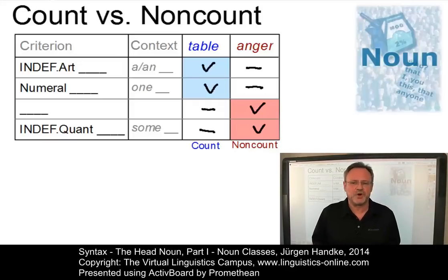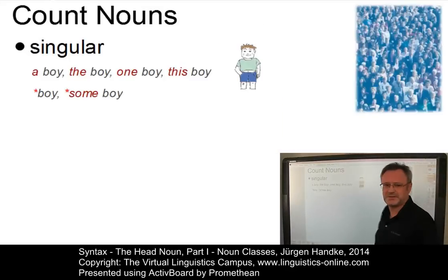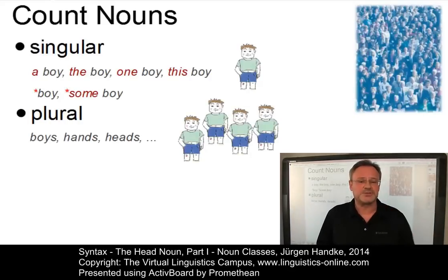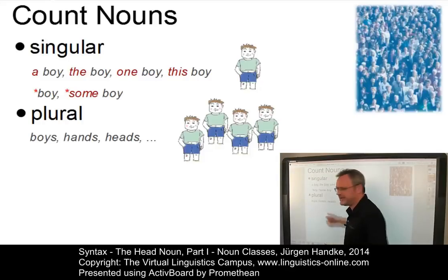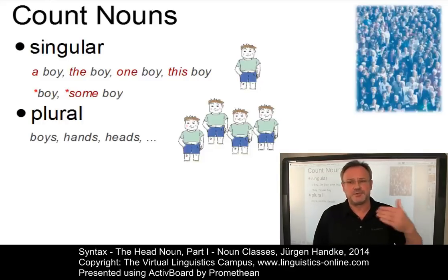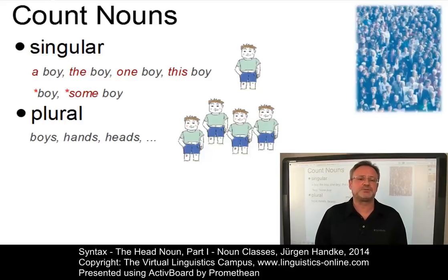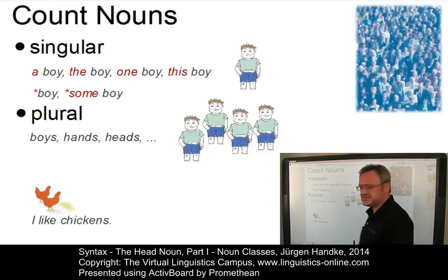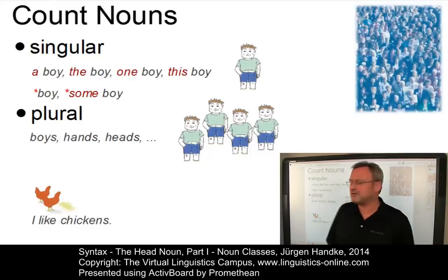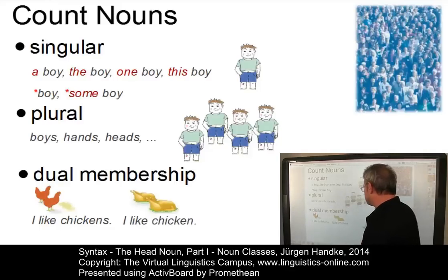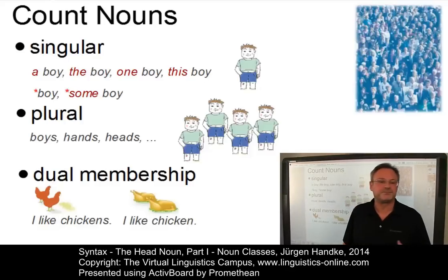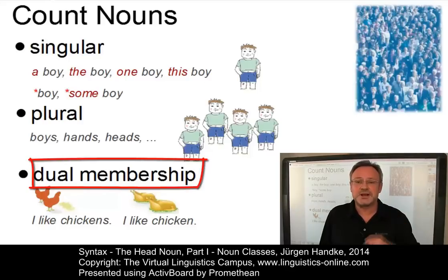Let us return to the formal classification of count nouns. In the plural, count nouns can occur without determiners, as in 'boys,' 'hands,' 'heads,' and so on. Furthermore, English makes it possible to look upon some objects from the point of view of both count and non-count, as in 'I like chickens,' where 'chickens' is a count noun, versus 'I like chicken,' where 'chicken' is a non-count noun. Such nouns like 'chicken' are said to have dual class membership.